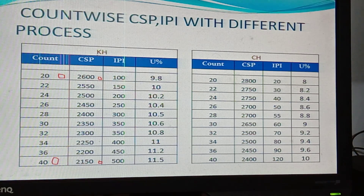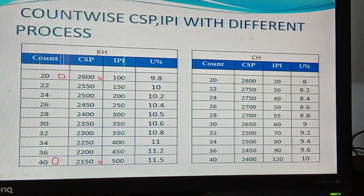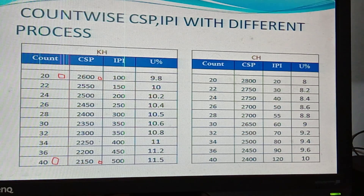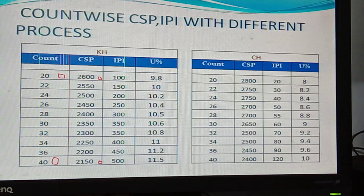The standard CSP varies — there is no fixed CSP by count. A variation exists because machinery differs for different raw materials. After the border, the standard becomes clear. This affects departments including color, dyeing, and mercerizing.